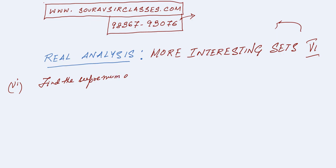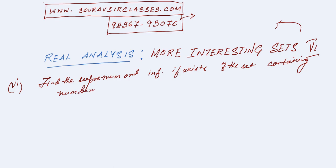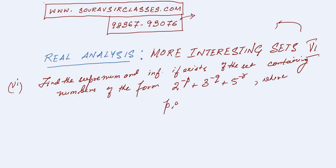Find the supremum and infimum, if exists, of the set containing numbers of the form 2 to the power minus p plus 3 to the power minus q plus 5 to the power minus r, where p, q, and r take on all positive integral values.